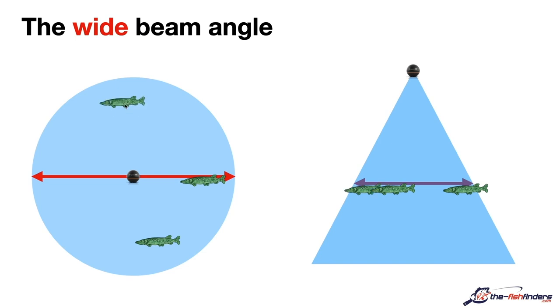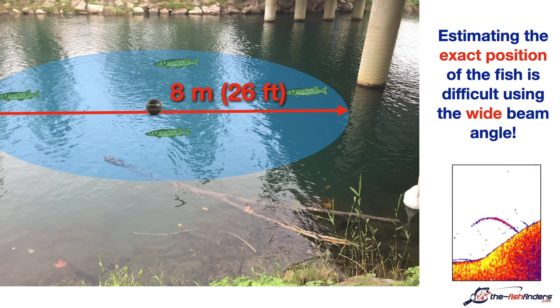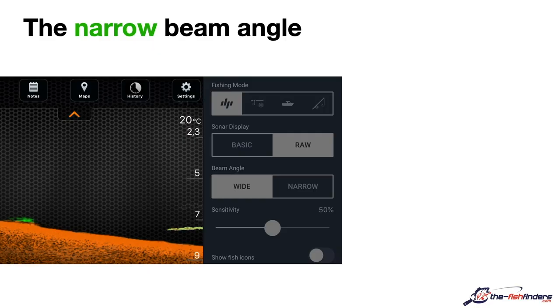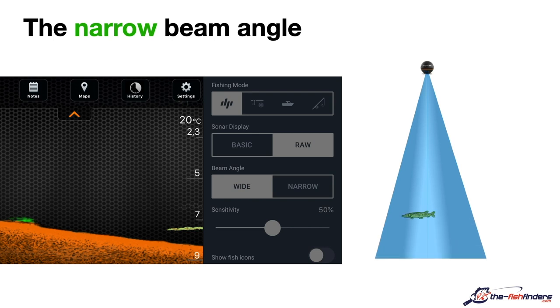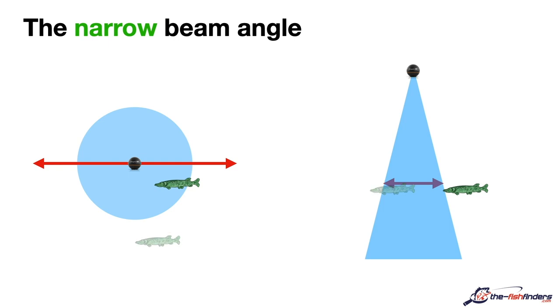We always see fish arches on our Deeper's display. In practice, when we see an arch from our Deeper, this means we can cast in all possible directions if we chose the wide beam angle setting. This means the probability of missing the pike is relatively high, as we do not know how far off the pike is to the left, to the right, to the front or to the back of the Deeper. If we now set the narrow beam angle on our smartphone app, we will surely miss some pikes and they will not be displayed. If we can see an arch with the narrow setting, then we can relatively well estimate the pike's position, or how close it is to the Deeper.